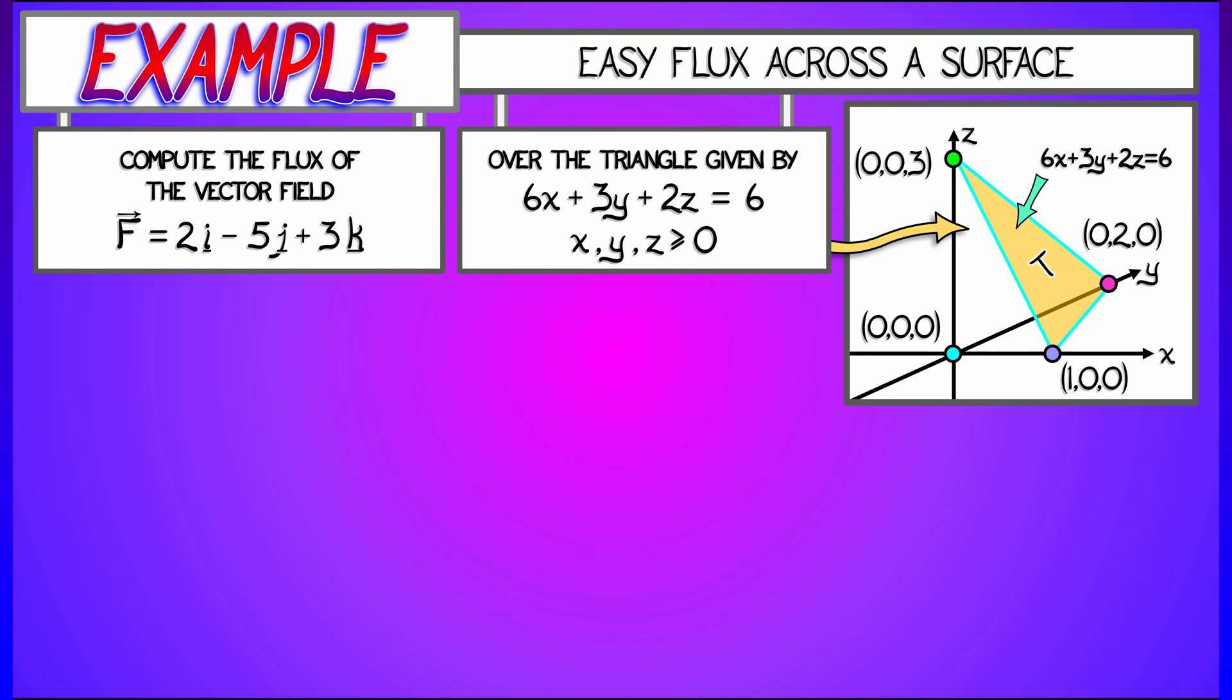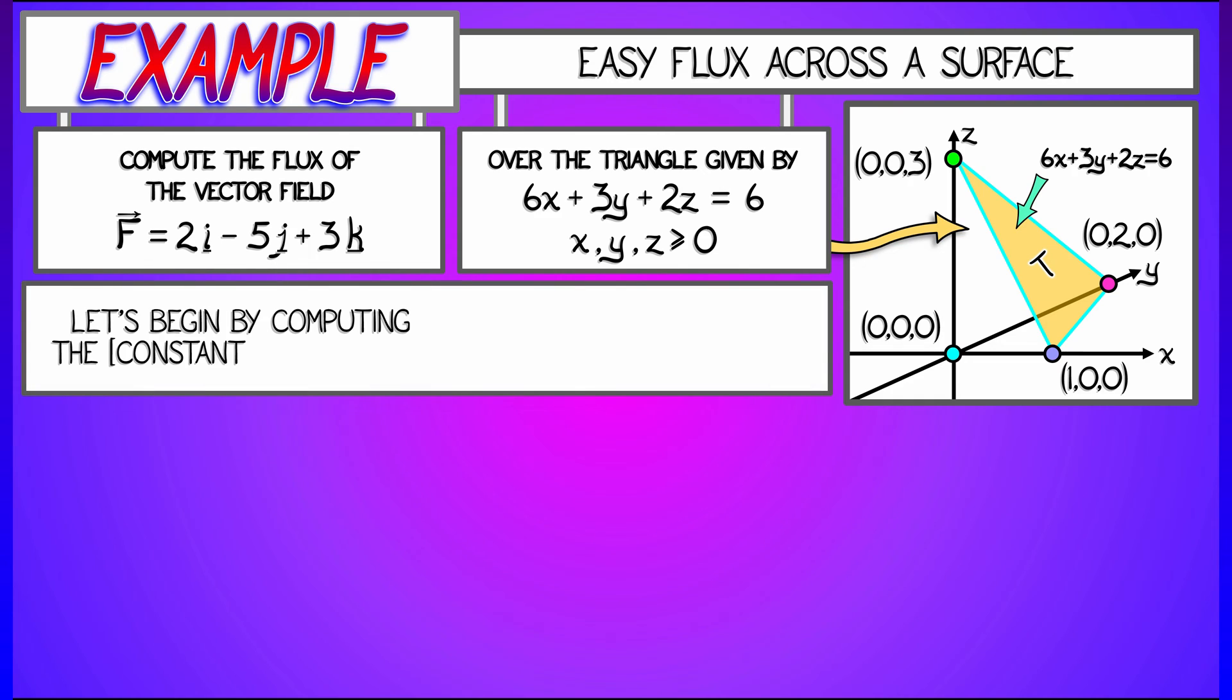Now let's do this simple example using just plain vector calculus notation. We're going to begin by orienting this triangle with the outward pointing normal pointing out away from the origin.